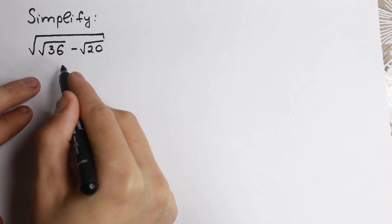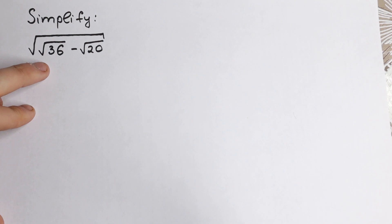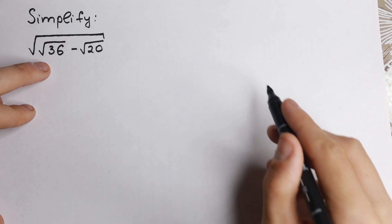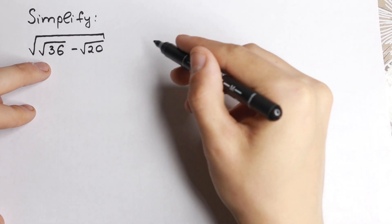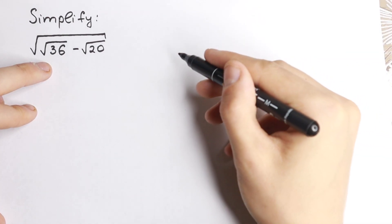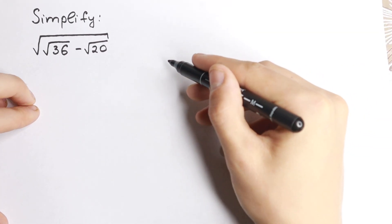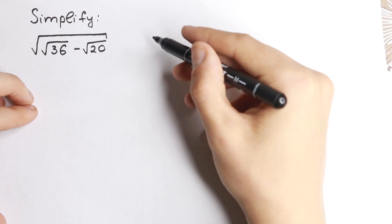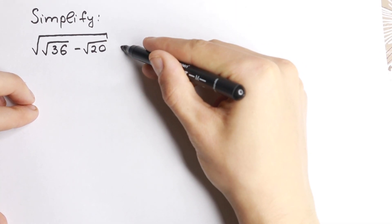We have square root of square root of 36 minus square root of 20, and we need to find our answer. How can I do this?